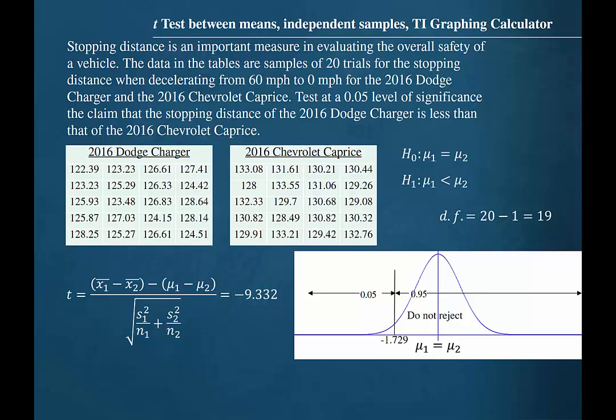We can use the TI graphing calculator to find these values. In order to find the critical value, we will need to know the significance level and whether it is a one-tailed or two-tailed test. In this case, we have a left-tailed test with a 0.05 level of significance. This means that the entire level of significance, or alpha, is in the left tail of the hypothesized distribution. The number of degrees of freedom is 19.